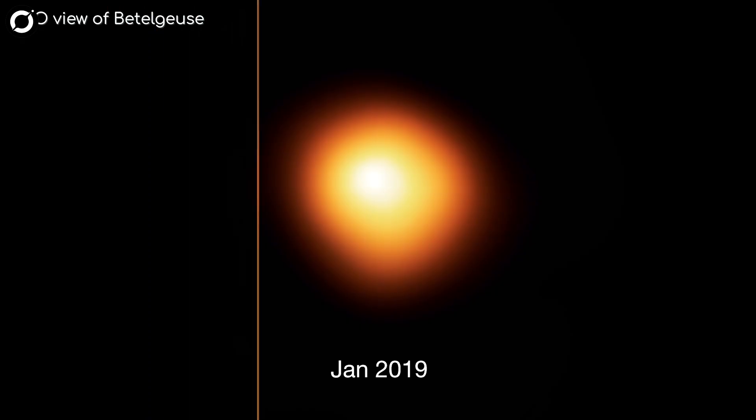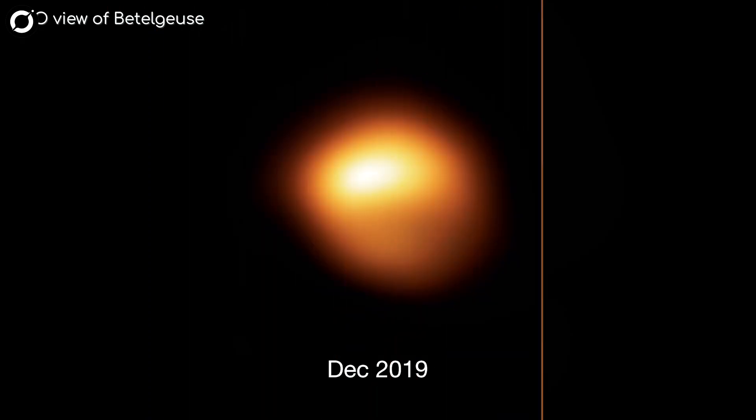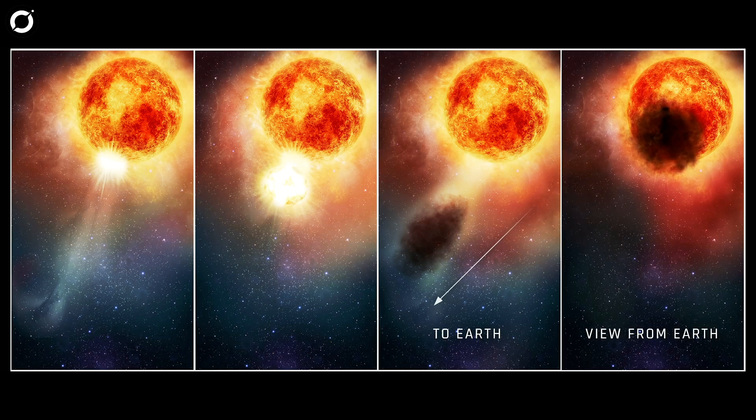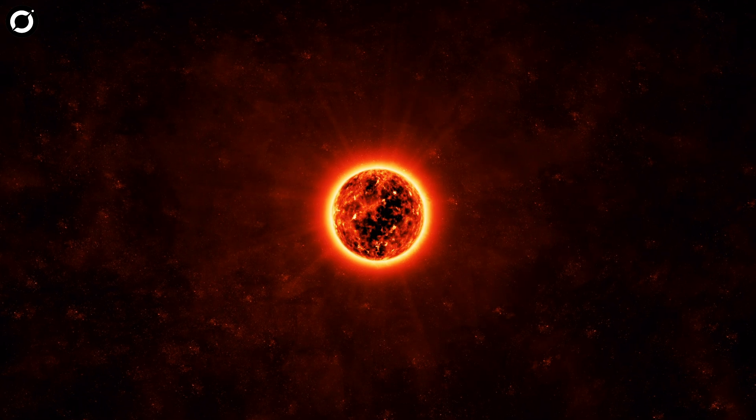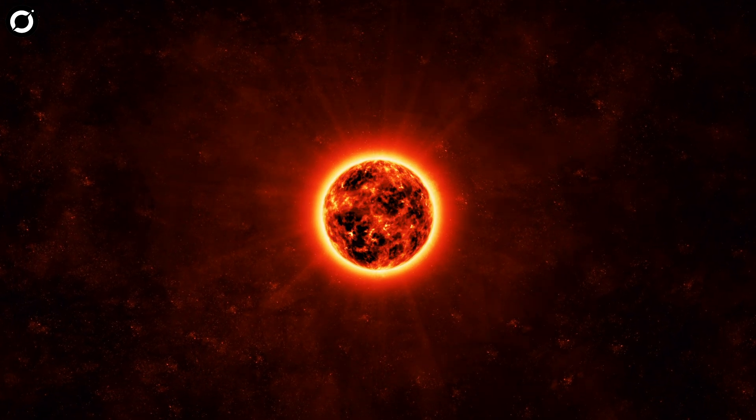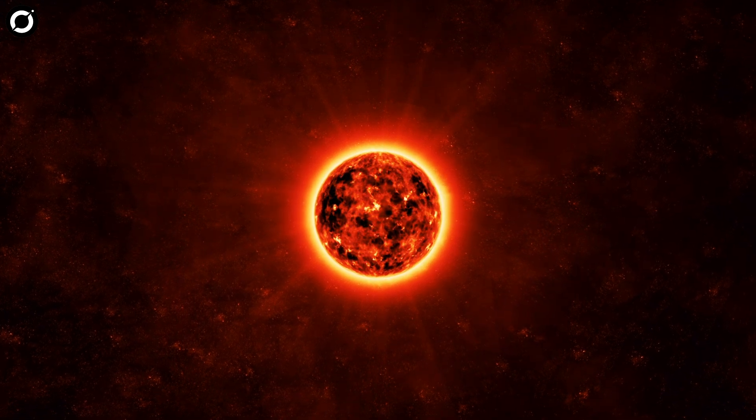However, the star last dimmed in February 2020 and has since not repeated its cycle. What we know is that as the star recovered from blasting out a huge amount of its innards in late 2019, in an event that became known as the Great Dimming, its surface is now bouncing like gelatin on a plate, and it has lost the natural 400-day heartbeat that has been present for at least two centuries.